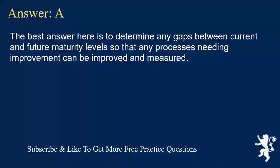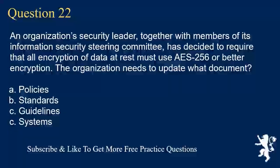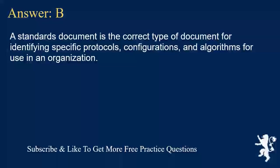Answer A. The best answer is to determine any gaps between current and future maturity levels so that any processes needing improvement can be improved and measured. Question 22. An organization's security leader, together with members of its Information Security Steering Committee, has decided to require that all encryption of data at rest must use AES-256 or better encryption. The organization needs to update what document? A. Policies. B. Standards. C. Guidelines. D. Systems. Answer B. A standards document is the correct type of document for identifying specific protocols, configurations, and algorithms for use in an organization.